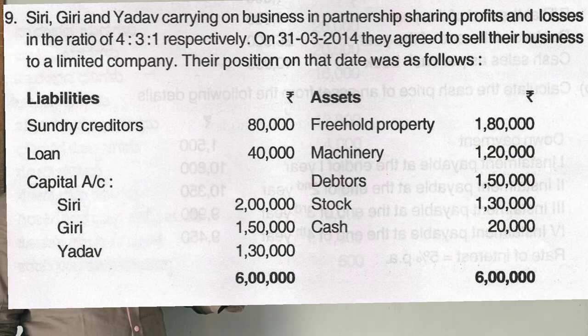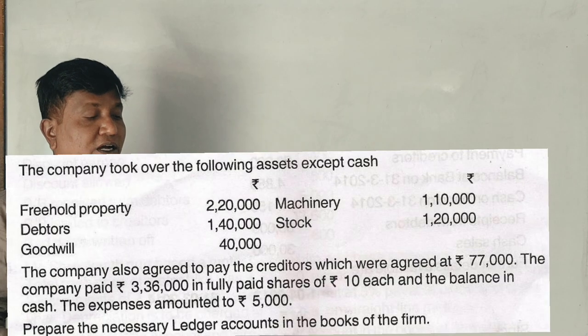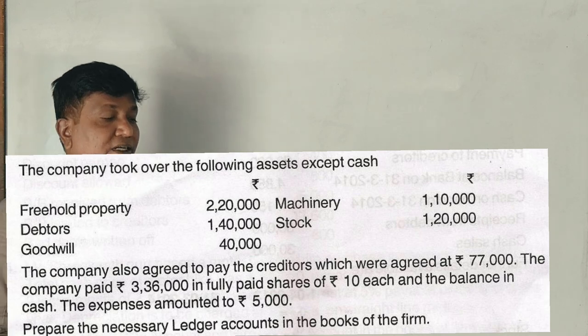Their position as of that date was: liabilities include creditors, loan, and capital accounts for Siri, Giri, and Yadav. Assets include freehold property, machinery, debtors, stock, and cash. Total balance sheet is 6 lakhs. The company takes on the following assets except cash: freehold property, debtors, machinery, and stock.